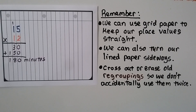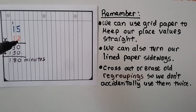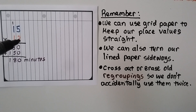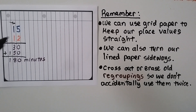Remember, we can use grid paper to keep our place value straight, or turn lined paper sideways to use the lines for place value alignment. Also remember to cross out or erase old regroupings so we don't accidentally use them twice. After finding that 2 times 1 ten plus the regrouped 10 gives 3 tens, we cross it out before multiplying the tens place.